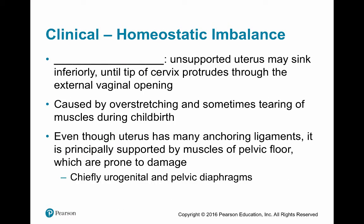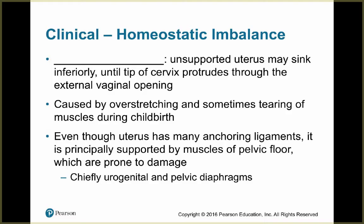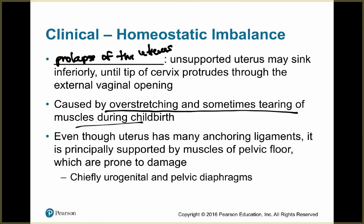Another homeostatic imbalance is uterine prolapse, where an unsupported uterus sinks inferiorly until the tip of the cervix protrudes through the external vaginal opening. It can be caused by overstretching or tearing of muscles during childbirth. Although the uterus has many ligaments, it is principally supported by the muscles of the pelvic floor — specifically the urogenital and pelvic diaphragms — which are prone to damage.